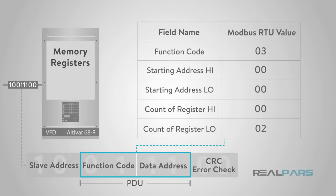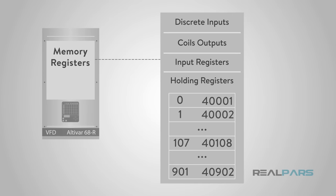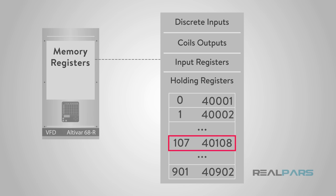The fields in the PDU are broken down into bytes and grouped by field name. The request message contains function code 03, the starting address high and low bytes of address 0000, and the count number of addresses to read from the slave — register high and low bytes of count value 0002 — specifying the starting register and quantity of registers to be read. For example, holding register 40108 is actually addressed as register 107 in the message data area of the PDU.